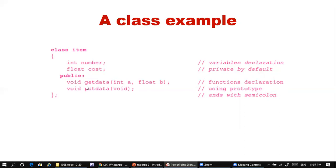You can write functions either inside the class or outside it — writing only the prototype inside. Here, 'get_data' has only a prototype inside the class while the function is defined outside. The prototype tells us: get_data takes two arguments and returns void. 'put_data' is a member function that takes no arguments and returns no value. That is how the class is defined.